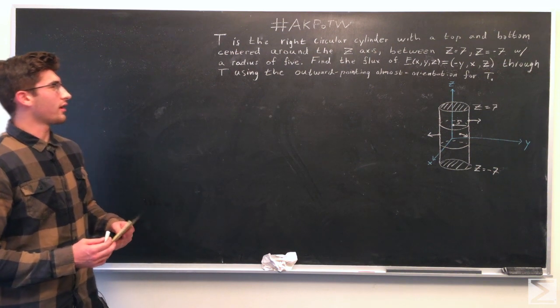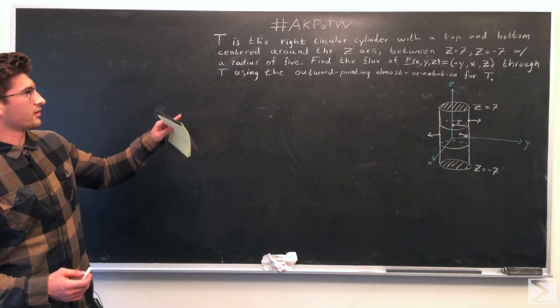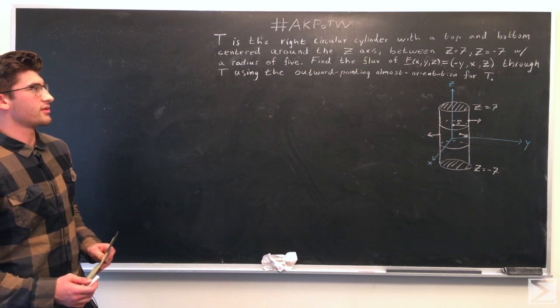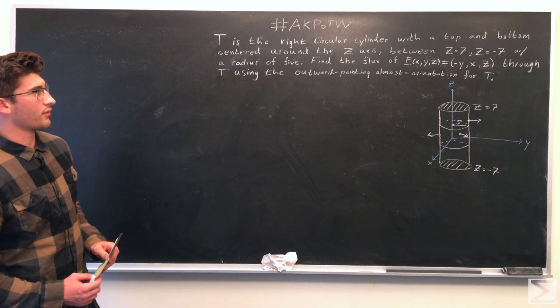In this problem, we're given a cylinder T. The cylinder is a right circular cylinder with a top and bottom centered around the z-axis between z equals 7 and z equals negative 7 with a radius of 5.